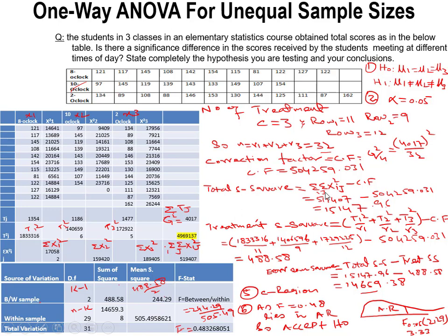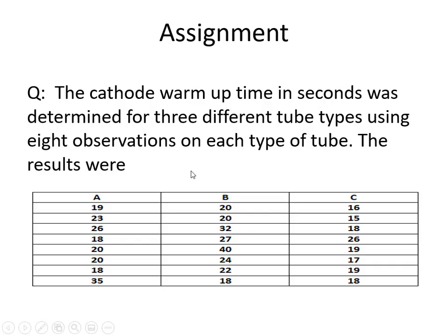I hope you understand how to conduct a one-way ANOVA with unequal sample sizes. The only difference is in the treatment sum of squares formulation — because the observations in each sample are different, we divide each T squared by its respective sample size. Now, there is a simple assignment: three groups with equal observations (6, 7, 8 per group, total N = 24). Check whether all sample means are equal. Please try to solve this. Thank you.